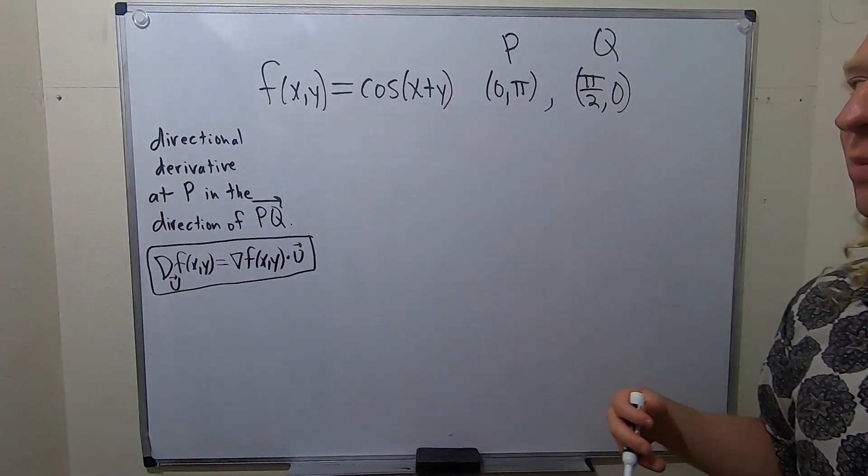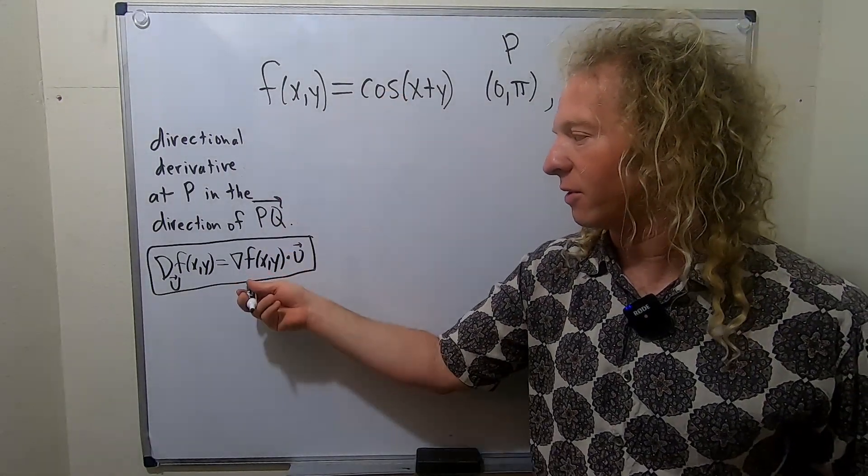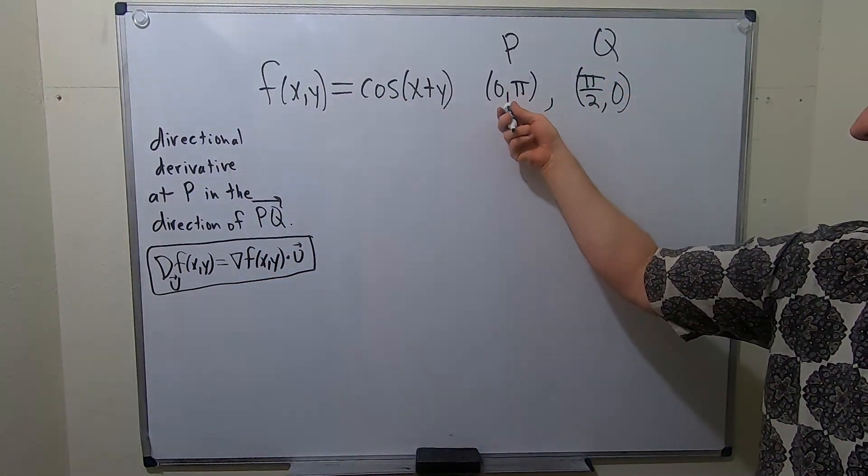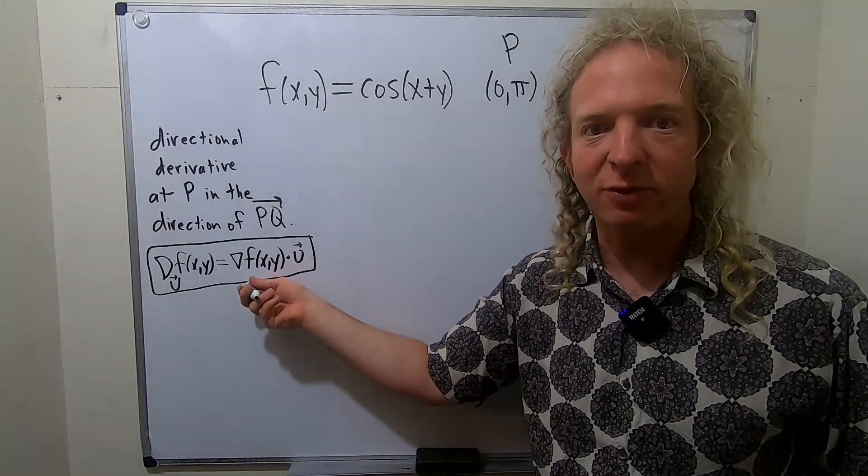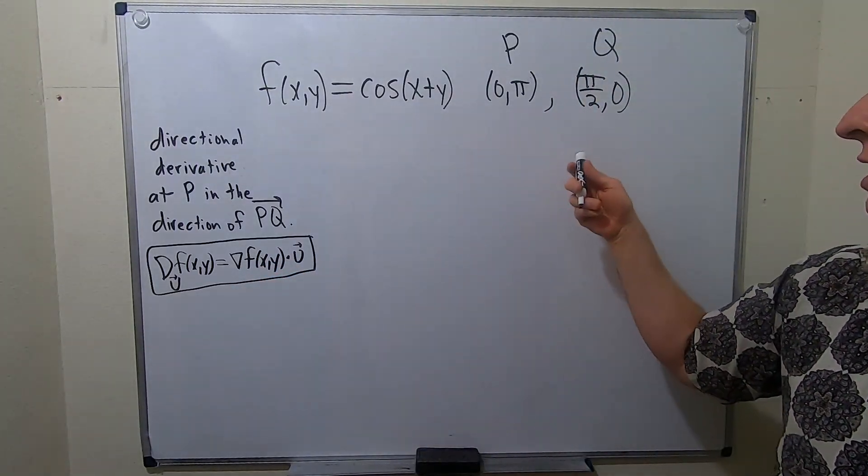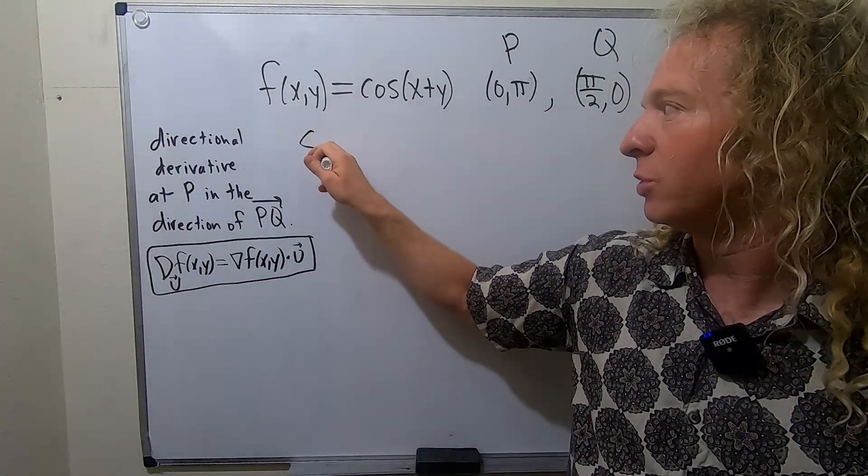We need to figure out a couple things first. We've already got f so we can figure out the gradient, and we've got our point so we can plug that in to the gradient after we figure it out. Then we need to figure out our unit vector. Let's find our unit vector first.